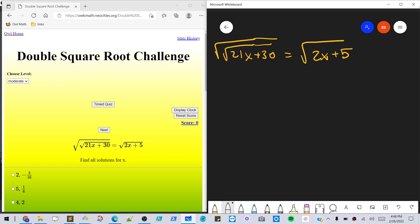And what I'm gonna do first is I'm going to square both sides, and we'll have 21x plus 30 equals 2x plus 5.